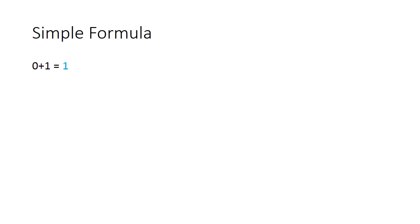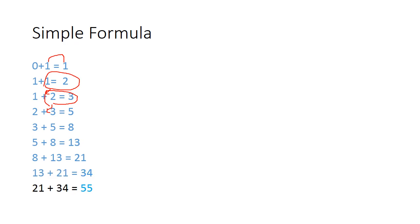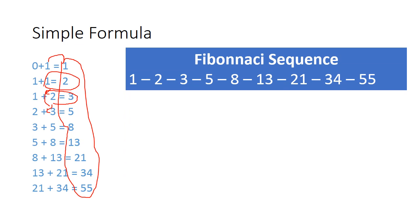We have a simple formula that can represent these proportions. We start with the number one, then add the last two numbers: one plus one is two, one plus two is three, two plus three is five, and so on — giving us 8, 13, 21, 34, 55, and we could keep going. These numbers make up the Fibonacci sequence, a beautiful sequence of perfect proportions repeated throughout nature.